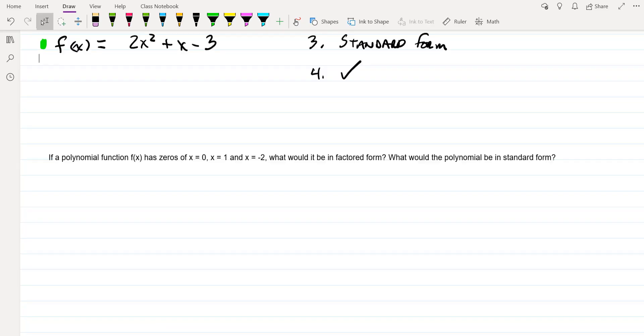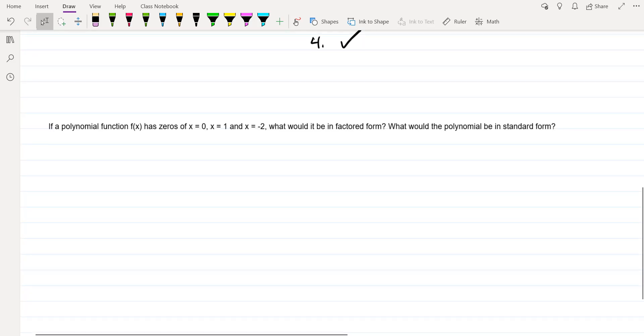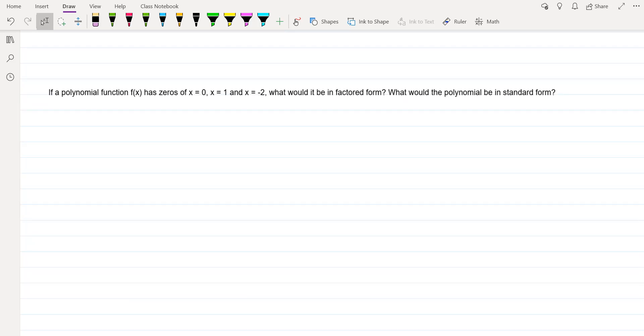All right, so we've already done two examples. If you haven't seen those, make sure you take a look at those in the other videos. Now, on this one, our polynomial has zeros of zero, one, and negative two.